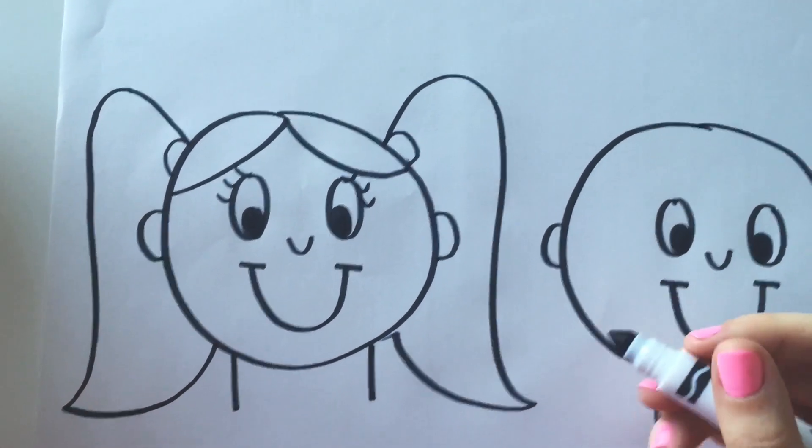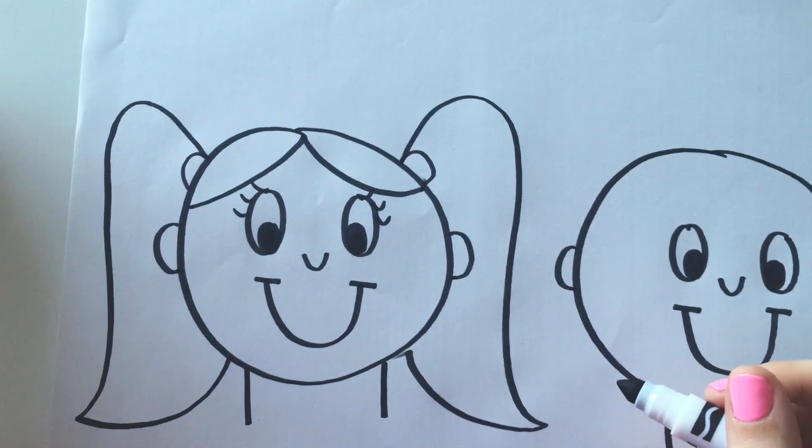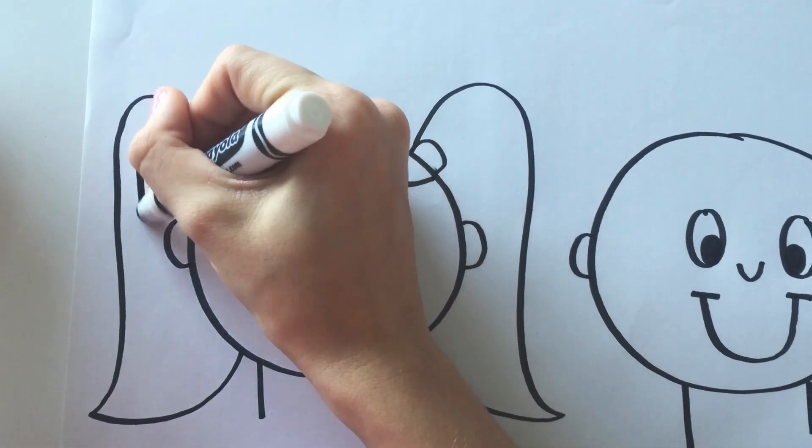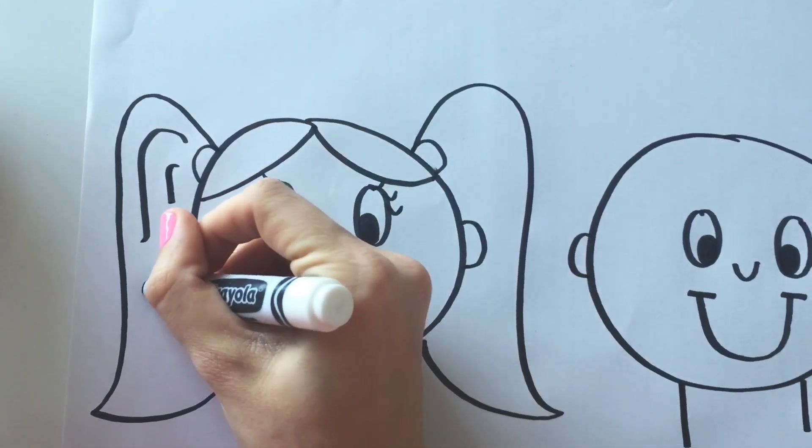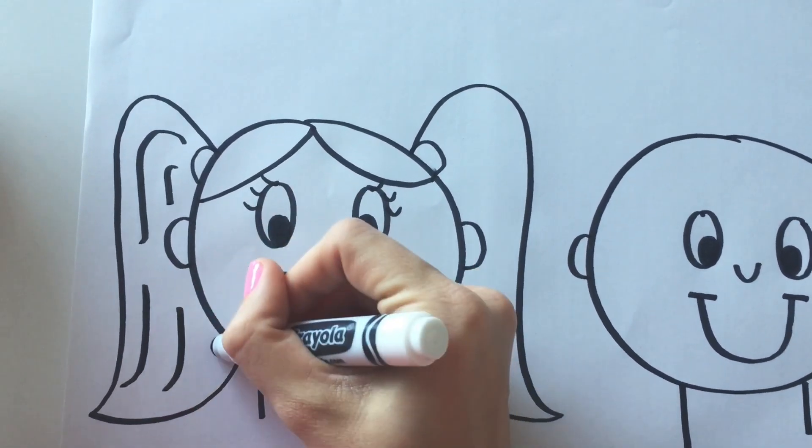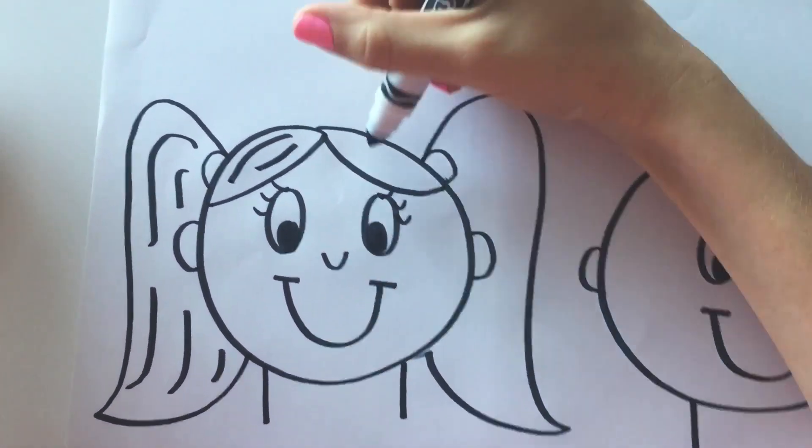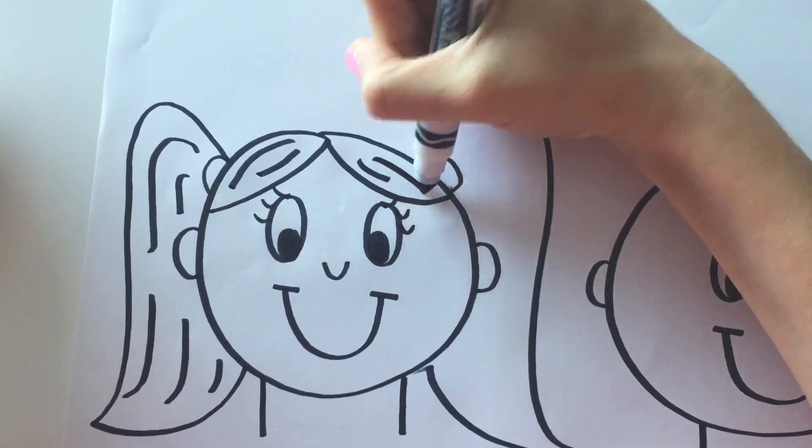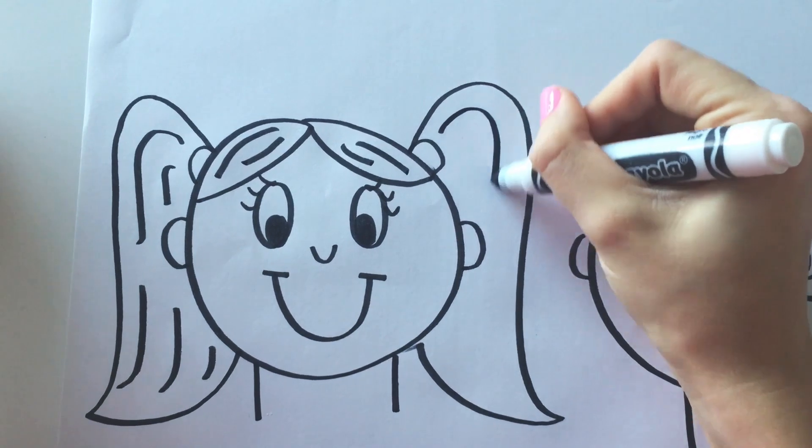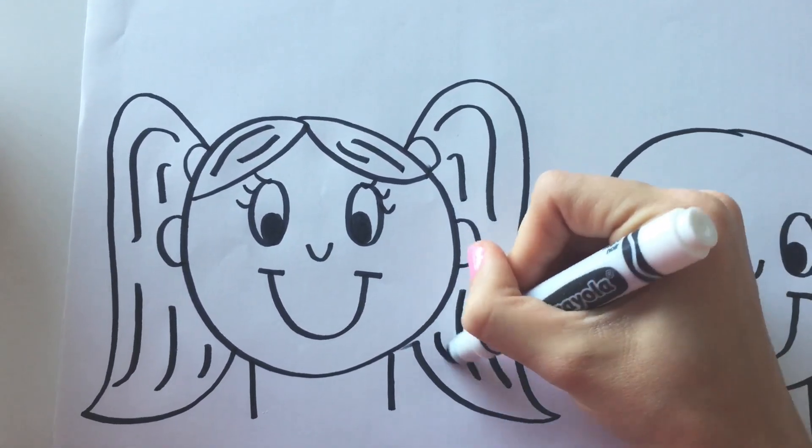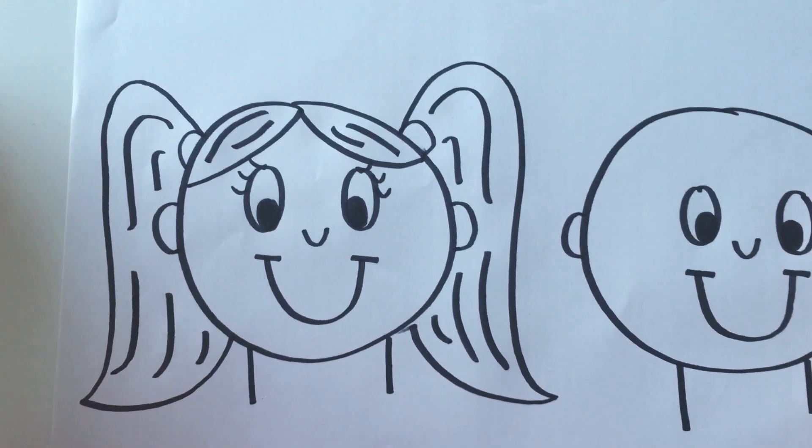And another cool thing you can do is add some lines to the hair to make it look more real. Like this. And you can do it to the top of the hair too. And add to the other pigtail. One, two, three. And that's how you draw a girl.